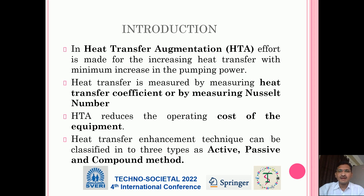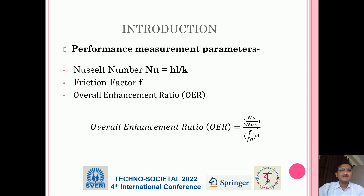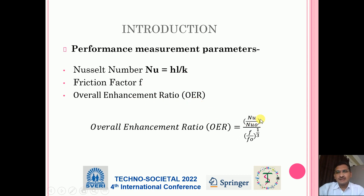In the active technique we require an input power, whereas in passive we don't require any kind of input power, and in the compound method it's a combination of active and passive. The performance of heat transfer augmentation can be measured by three terms: Nusselt number, friction factor, and overall enhancement ratio. A friction factor is a measure of the pumping power, whereas overall enhancement ratio is the ratio of Nusselt number and friction factors.